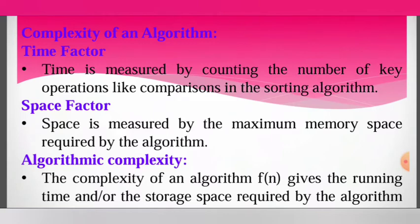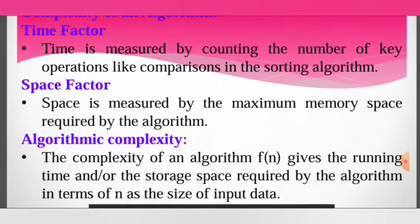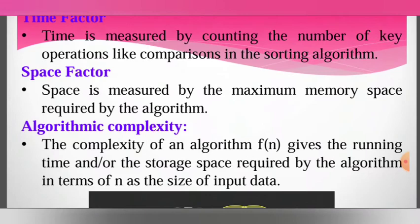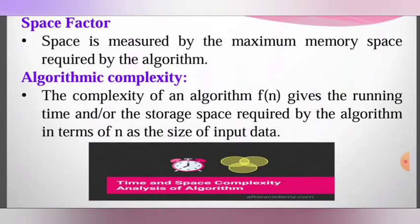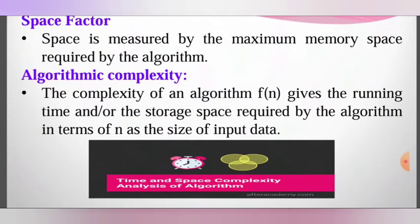The time factor and space factor can be denoted in the form of f of n. The complexity of an algorithm f(n) gives the running time and the storage space required by the algorithm in terms of n as the size of the input data. Here n represents the number of inputs given to the algorithm, so f(n) is the time and space factor of an algorithm.